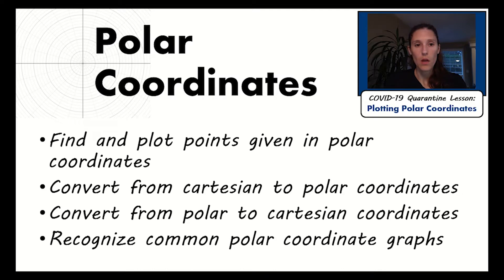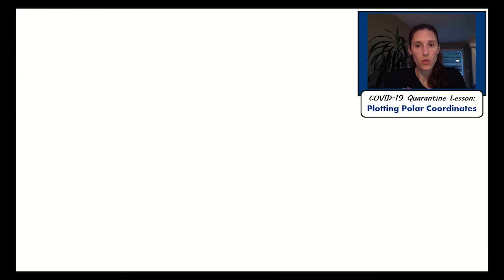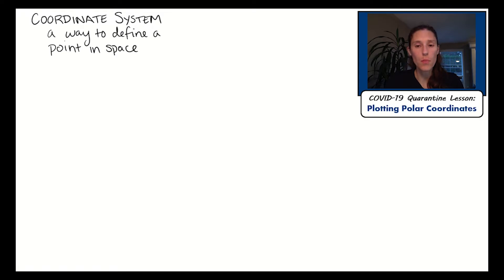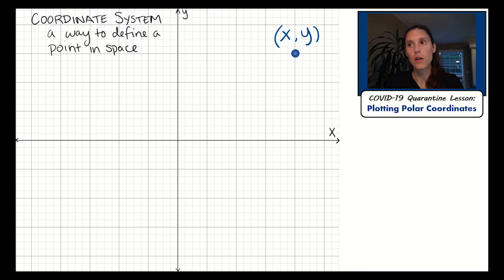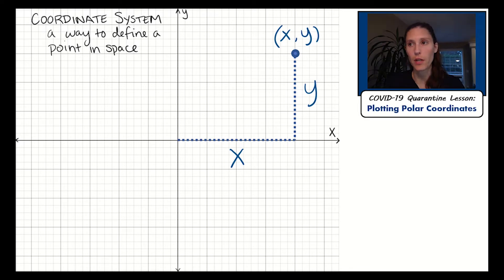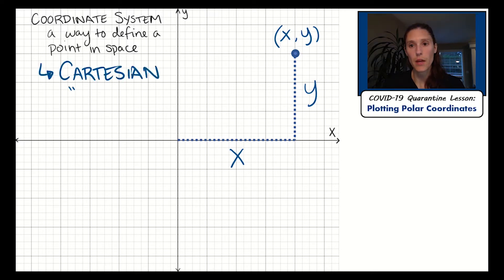Let's start with defining what a coordinate system is. A coordinate system is just a way to define a point in space. When we graph, we're typically used to graphing on a Cartesian plane with X and Y values. Those two numbers define where that point is on the plane — the X value being the horizontal distance from the origin, and then you go up from the X axis Y amount in whatever units you're dealing in. This type of grid is called the Cartesian coordinate system, and you've probably been dealing mostly with it throughout your math background.